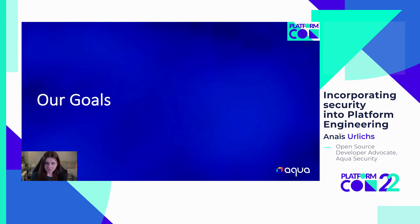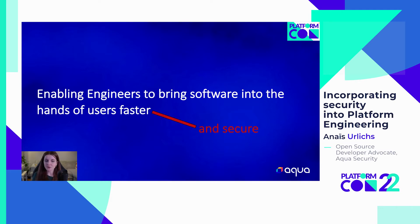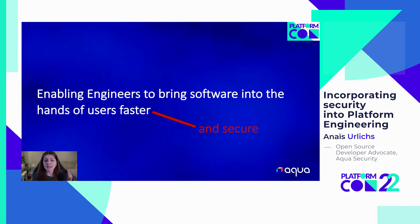What are our goals when we incorporate security tools into our platform engineering? In platform engineering, we want to enable our engineers to bring software into the hands of users faster. Ultimately, we want to enable engineers to be more efficient and more productive at their day-to-day work. But we don't want to move faster and make our infrastructure, workloads, and applications less secure. We have to keep an eye on security — monitoring the state of security within our applications and workloads over time, making sure that as we become more productive, we also maintain security.